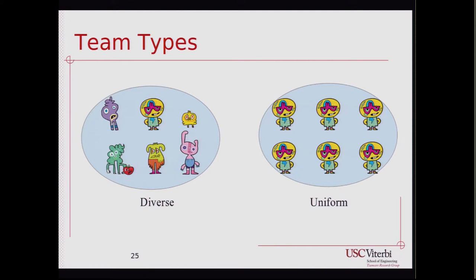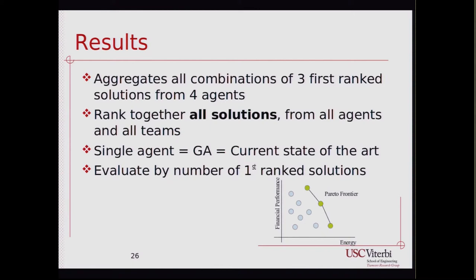We study two team types: a diverse team and a uniform team. We show experimental results where we aggregate all combinations of three first-ranked solutions from four agents. To evaluate the solutions, we rank all solutions together — team solutions and individual agent solutions — in the same Pareto optimization space. Each single agent is a GA, representing the current state-of-the-art approach. We evaluate systems by the number of first-ranked solutions in the Pareto frontier that each system is able to find.